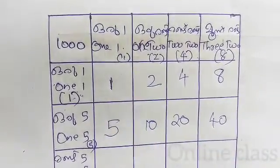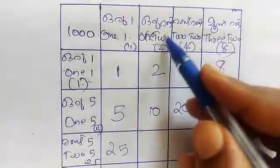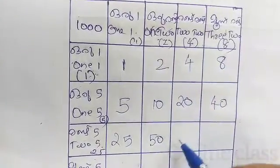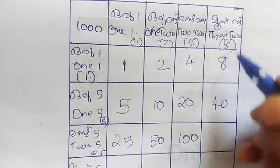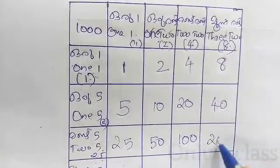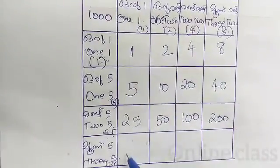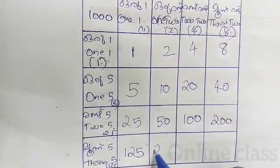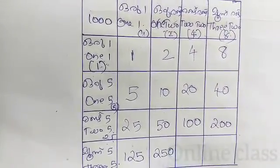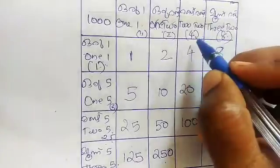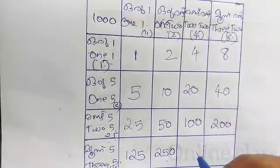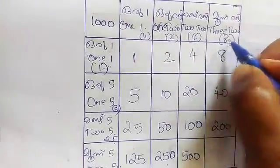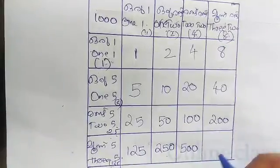1 x 20 = 20. 2 x 20 = 50. 4 x 20 = 100. 8 x 20 = 20. 1 x 125 = 125. 2 x 125 = 250. 4 x 125. 8 x 125 = 1000.